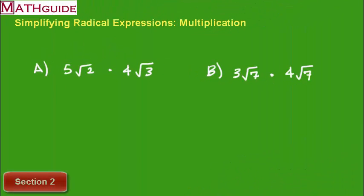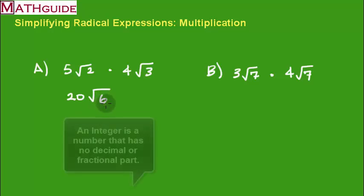I've got two problems listed here. These are basic level problems. And let's take a look at how this works. So anytime you're multiplying two expressions, you multiply the outside material times the outside material. So 5 times 4 is 20. And you multiply the inside times the inside. So I'm going to get square root of 6. That's all we could do here. There's nothing more I could do. I can't take the square root of 6.